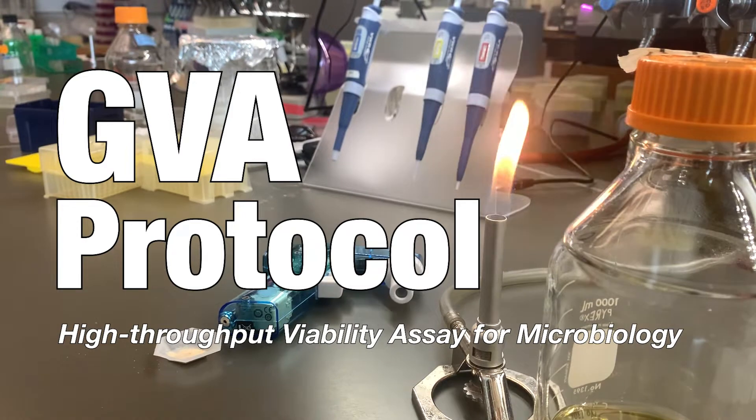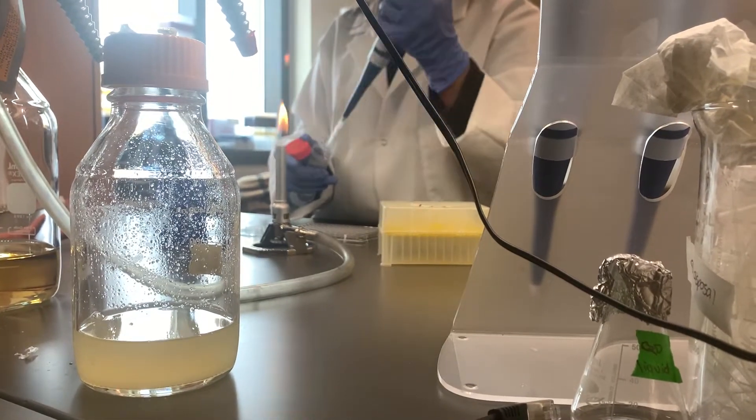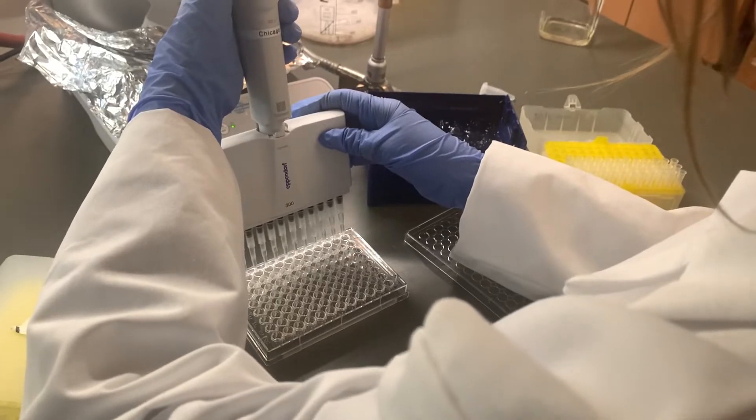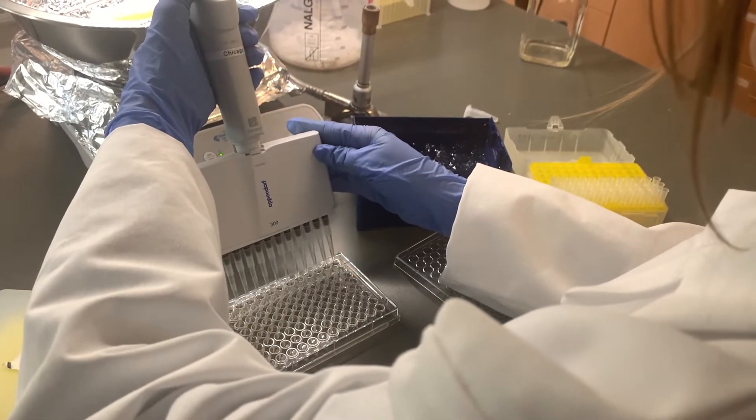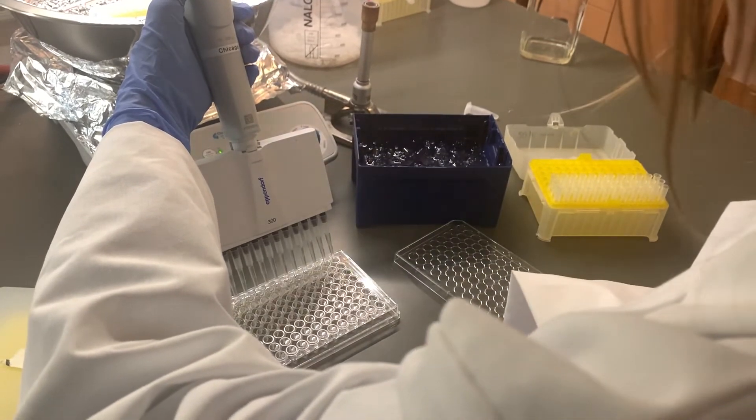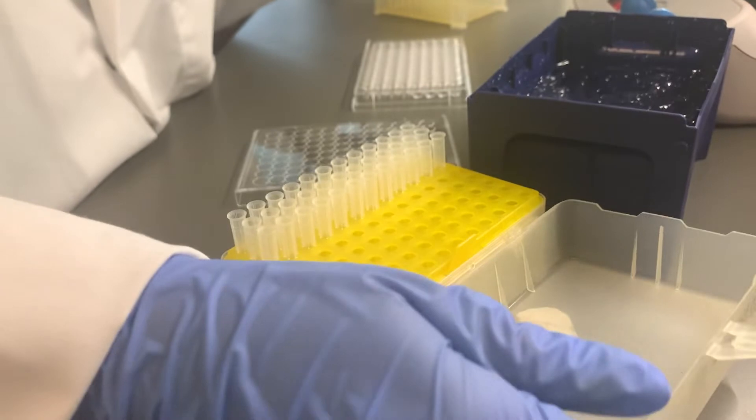A standard practice of many microbiology labs is determining the number of viable cells in a sample. A common method for this is the drop colony forming unit, or CFU assay. However, due to the time and resources required, this method is often a rate limiting step for high throughput viability measurements.